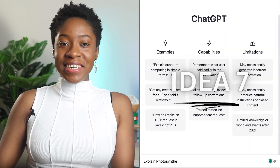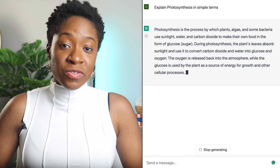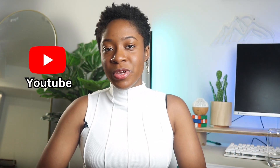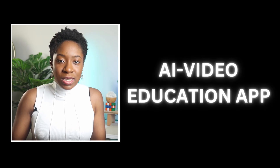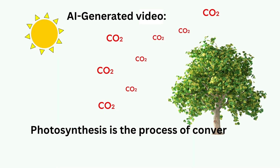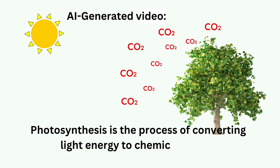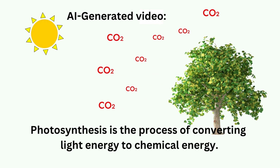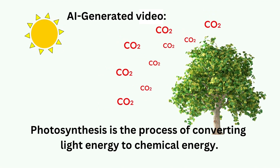Idea number seven: GPT-3 can educate us via text, but what if we want to be educated via video? Today we have YouTube, but imagine creating an app that generates a video to explain a concept — let's call this an AI education app. For example, you could tell this app to explain photosynthesis and it will produce a video with diagrams and pictures that explains what photosynthesis is.